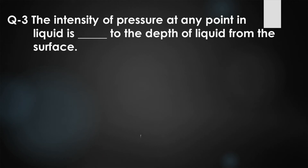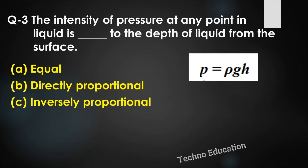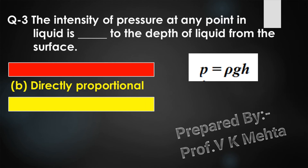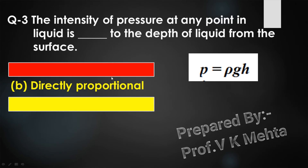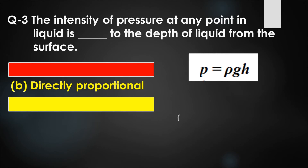Question number three: The intensity of pressure at any point in a liquid is blank to the depth of liquid from the surface — option A: equal, option B: directly proportional, option C: inversely proportional. According to hydrostatic law p = ρgh, pressure is directly proportional to depth. This statement is given by the hydrostatic law. The right answer is option B.